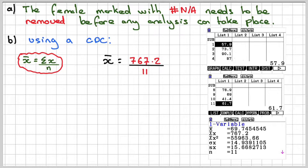So x bar would be 767.2 divided by 11. So we've got 11 bits of data. And that gives you 69.75 kilograms. So the mean will be this one. You need to round it to two decimal places in this case.